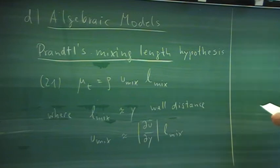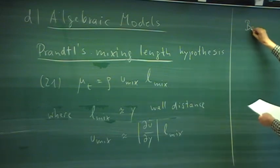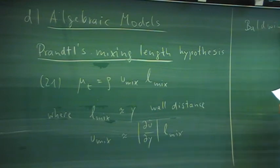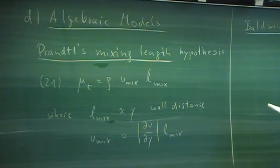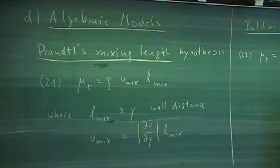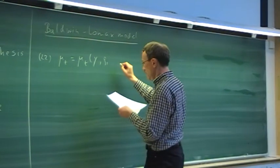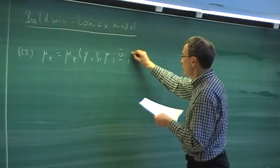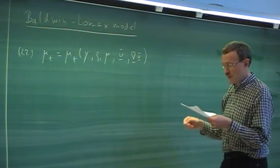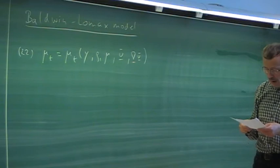This model is extensively used for compressible flow equations, and the most popular is the Baldwin-Lomax model — from the beginning of the 1980s, from NASA Ames, which you can also read about in the book by Wilcox. We can then determine mu_T as an algebraic function of the distance from the wall y, the density, the laminar viscosity, the mean velocity vector, and the gradient of the mean velocity vector. It just becomes an algebraic function.